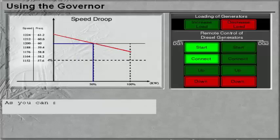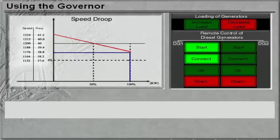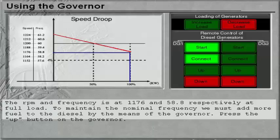As you can see, we have nominal frequency at 50% load. Continue to load the generator to 100%. The RPM and frequency is at 1176 and 58.8 respectively at full load.